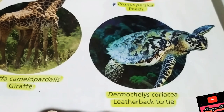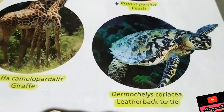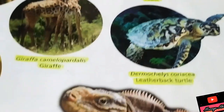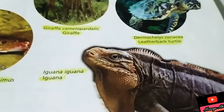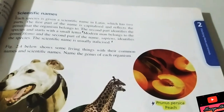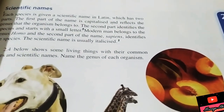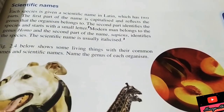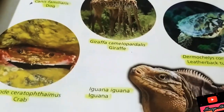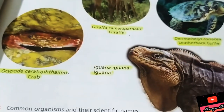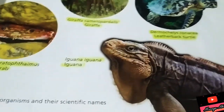More examples: the leatherback turtle is Dermochelys coriacea. Iguana iguana is the scientific name for iguana — very easy to remember! And peach is Prunus persica. So if anyone asks, you can say: I know the scientific name of peach — Prunus persica — and iguana — Iguana iguana.